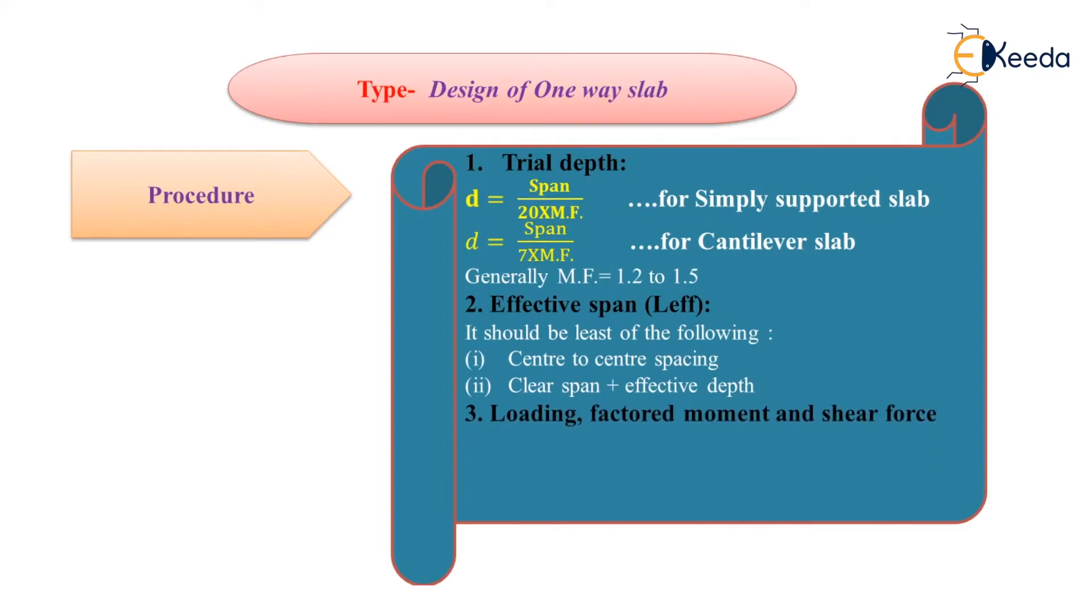Third, we have to find out the loading. In loading, firstly we calculate the dead load, then live load and floor finish. By adding these three values, we can find out the total load and convert it to factored load. Then we will find out factored moment and shear force according to the type of slab.